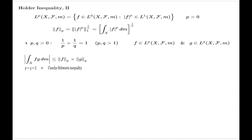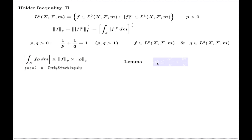I will prove this. There is a very nice, simple, elementary proof for this result, and it's based on the following observation which I call a lemma. The lemma says that you always have the inequality: ab ≤ a^p/p + b^q/q, between two non-negative numbers a and b.